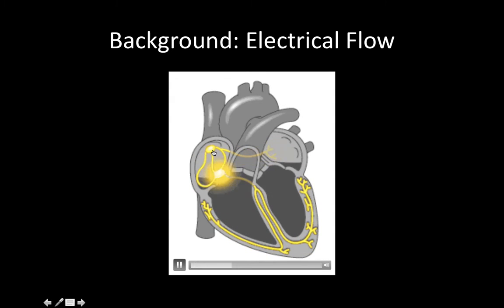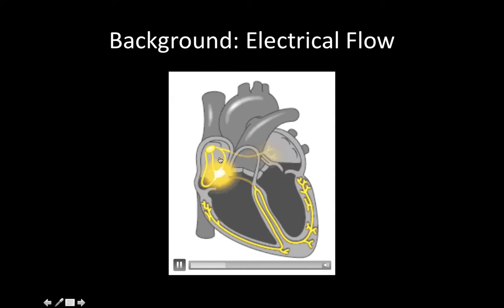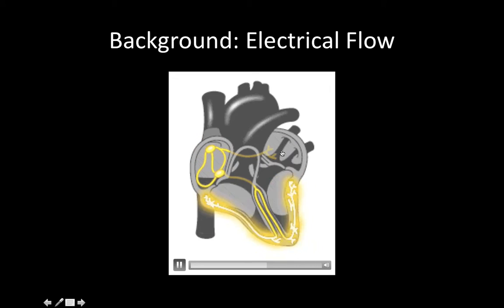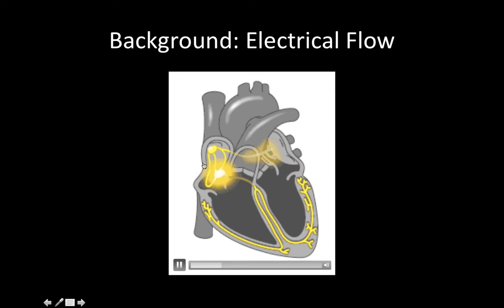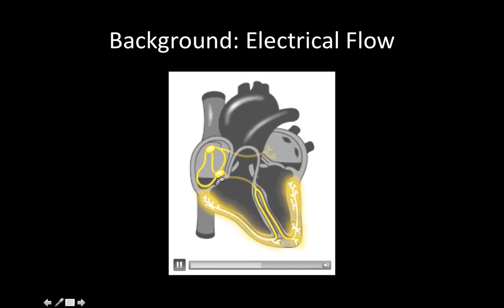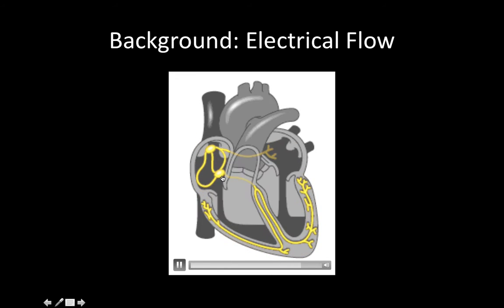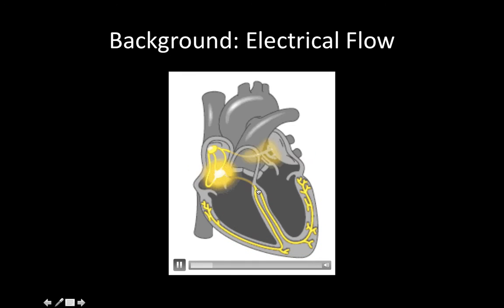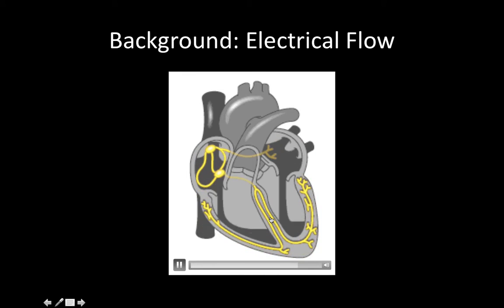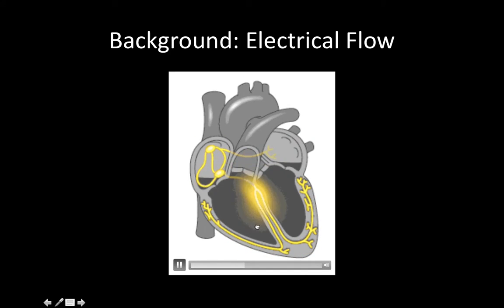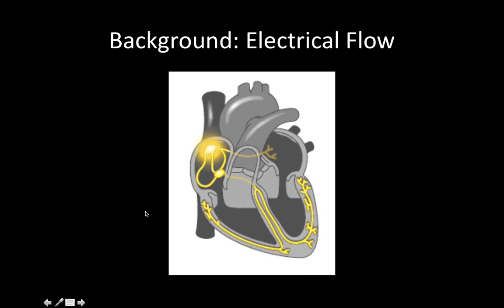When the SA node fires, an electrical action potential is passed into both atria and they contract. Then the electrical activity gathers in the atrioventricular node, or AV node, crosses the bundle of His into the left and right bundle branches, and then out the Purkinje fibers to contract the ventricles.